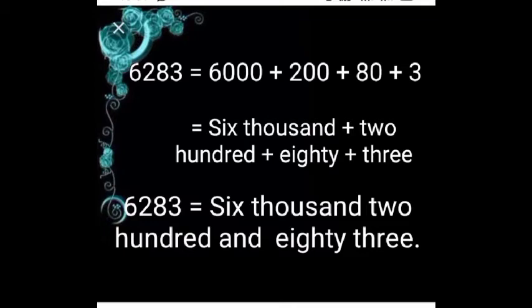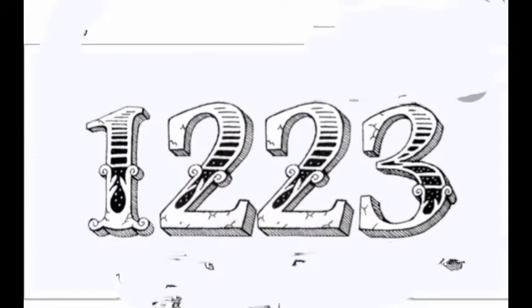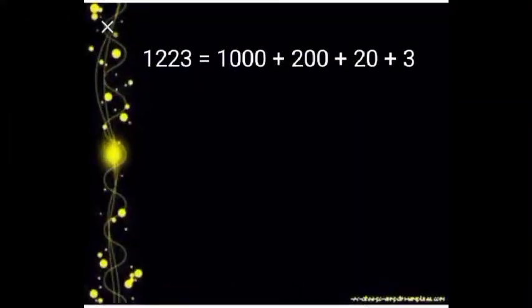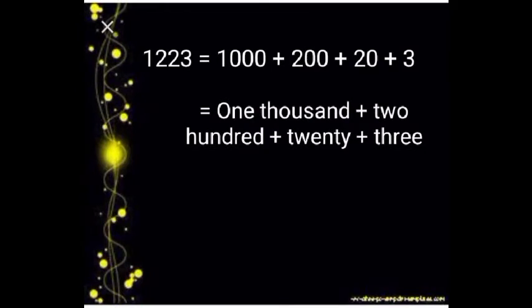So the number name of the given number 6283 is six thousand two hundred and eighty-three. The second question is 1223. First, write it in expanded form: 1000 plus 200 plus 20 plus 3. Write the name of each number below it, and then combine that name.